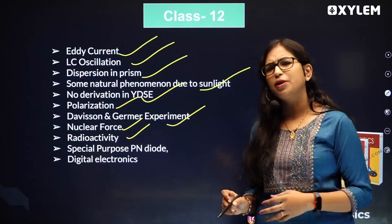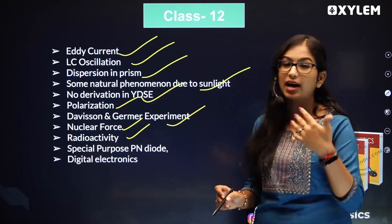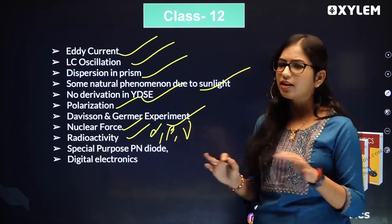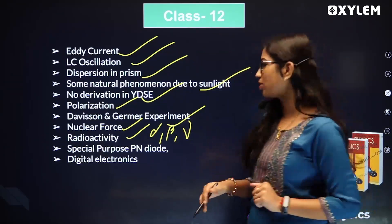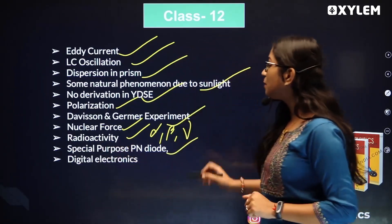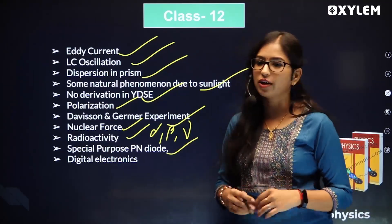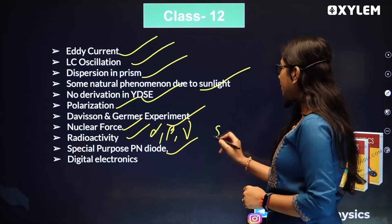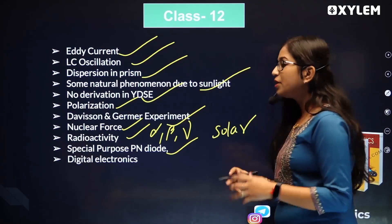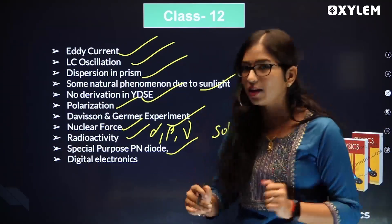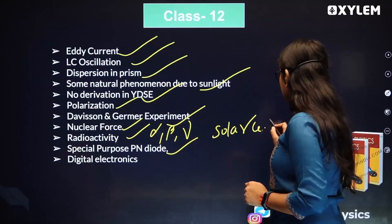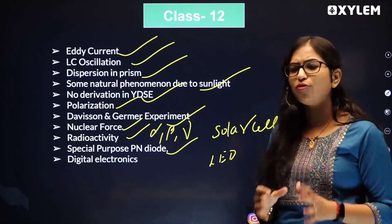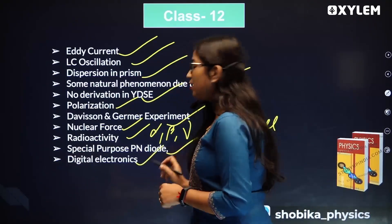Nuclear force is a super easy topic. Radioactivity and half-life can be done. Alpha decay and beta decay are super easy topics. Special purpose PN junction diodes are part of a deleted unit. Solar cell and LED - the PN junction diode applications - are not in the syllabus.